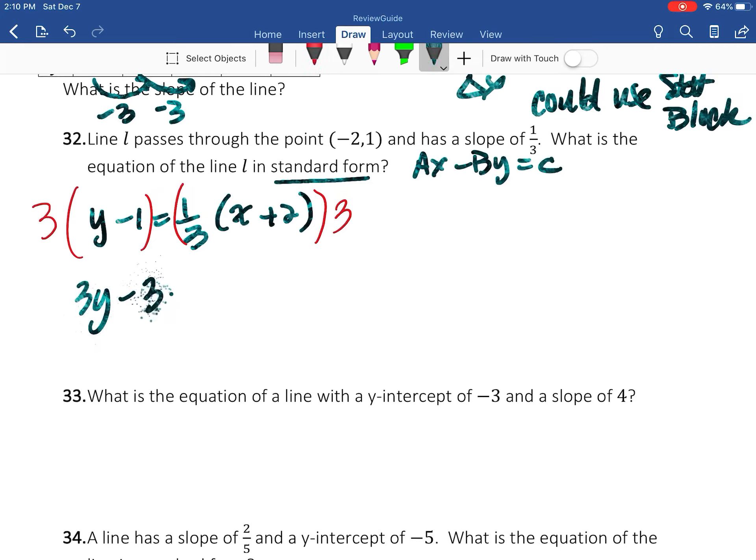So this is going to become 3y - 3 = ... Now because this is grouped, I only need to distribute that 3 to the 1/3, so then that just becomes 1. So then that becomes x + 2 on this side. So now I just need to add 3 to both sides.